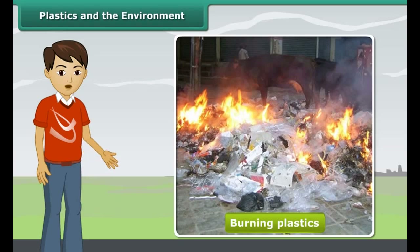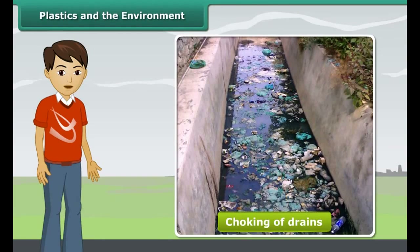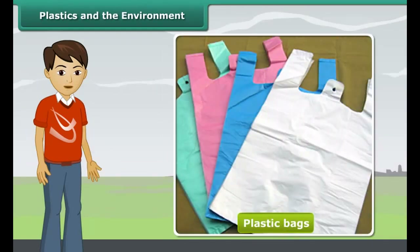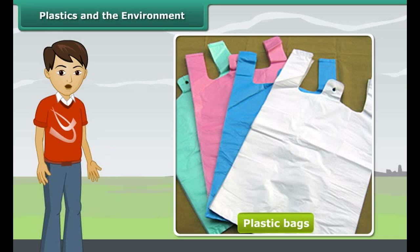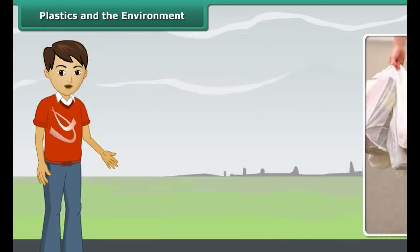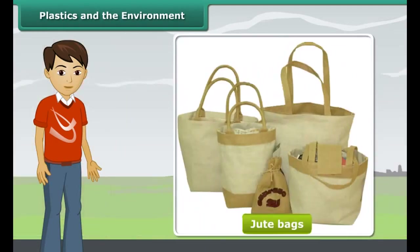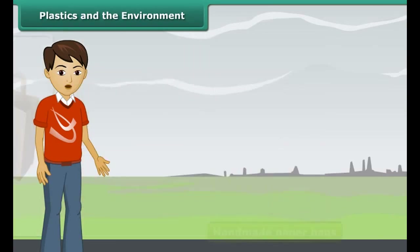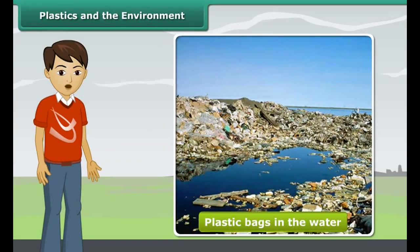You must have seen cows struggling to take out food from plastic bags thrown near garbage heaps. They end up eating the plastic bags as well, which can choke their respiratory tract or form a lining in their stomachs, causing their death. On burning, plastics release toxic fumes into the atmosphere. Another plastic menace is the choking of drains, which leads to their overflowing and flooding during the rains.